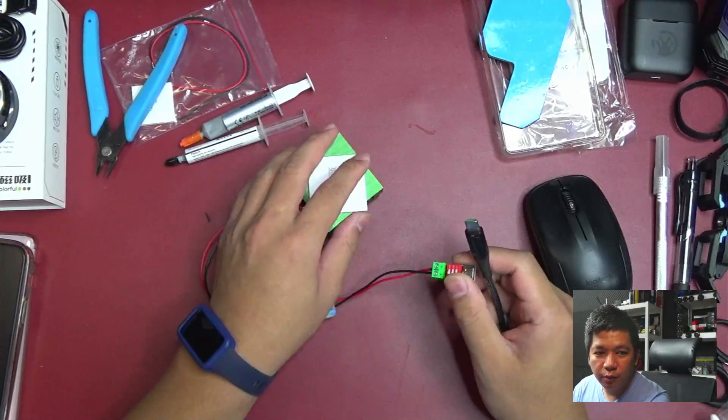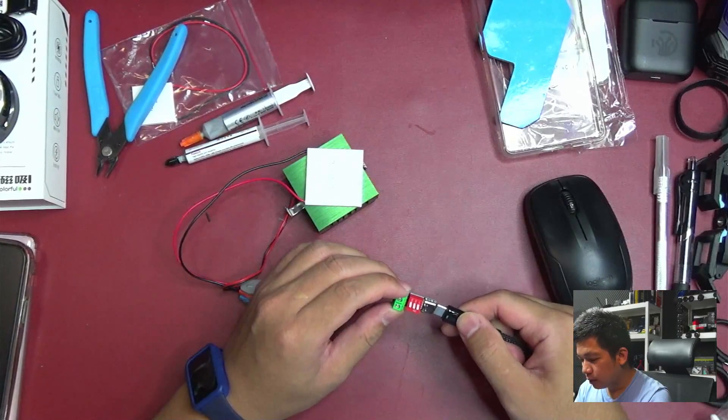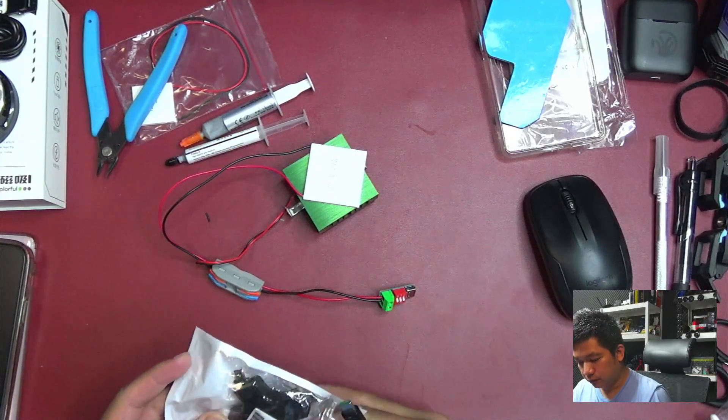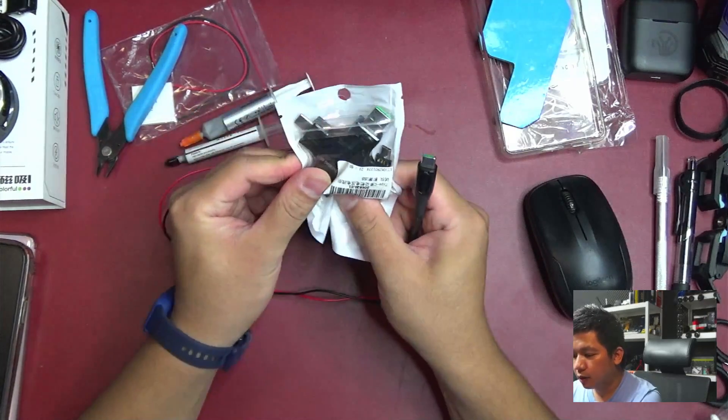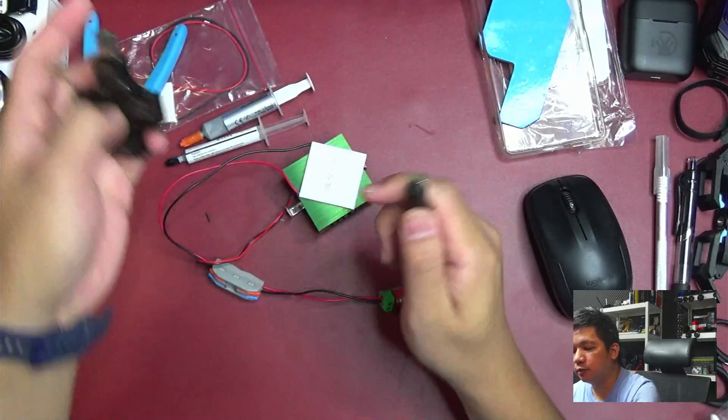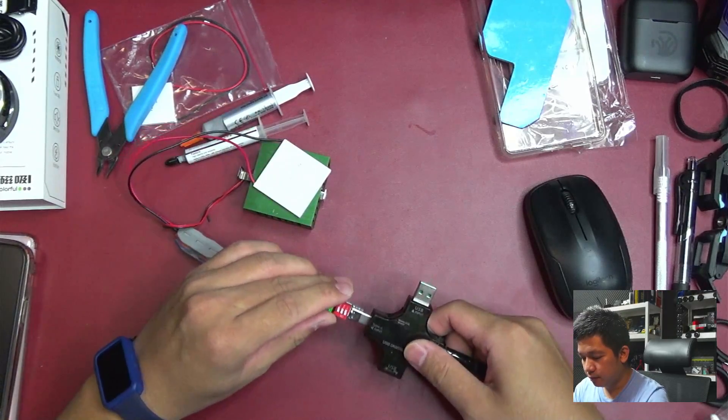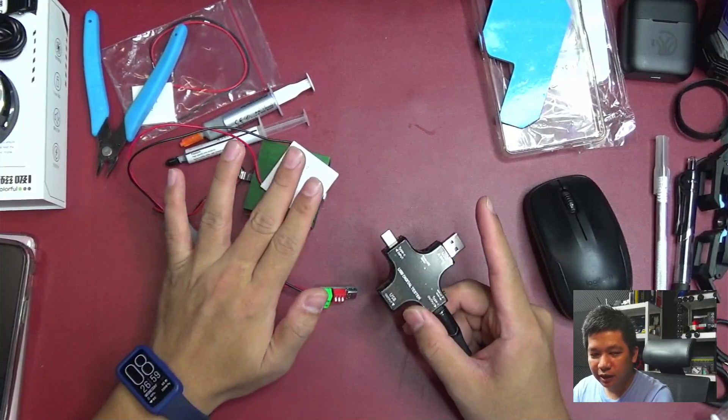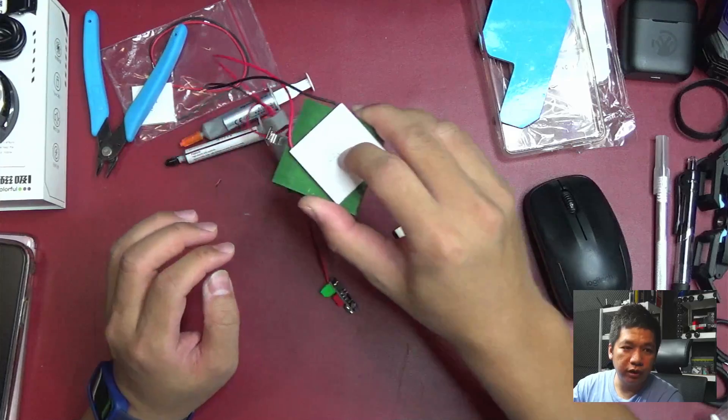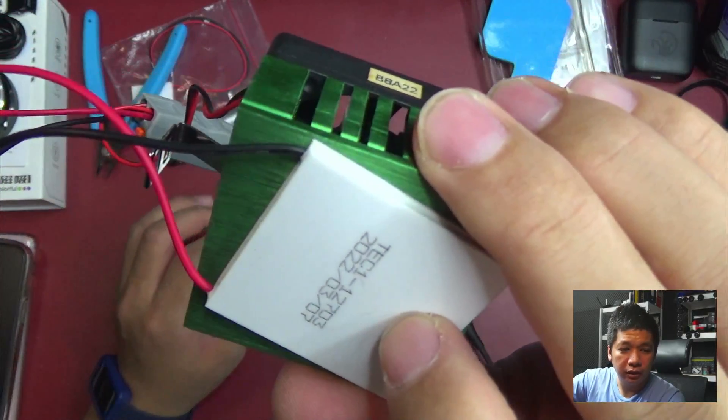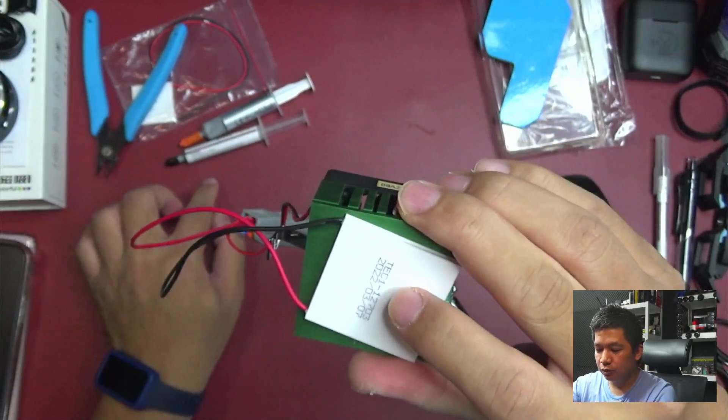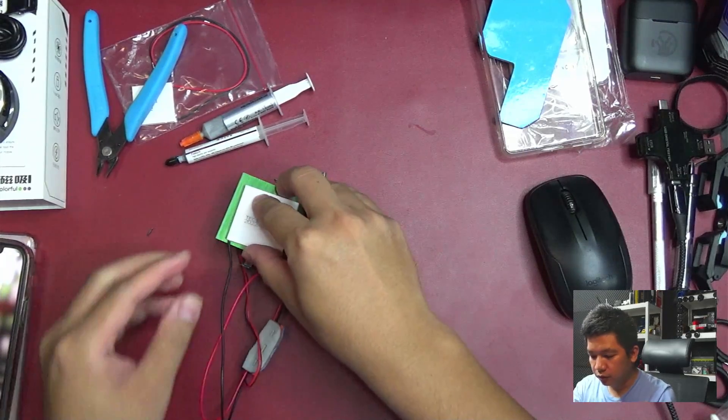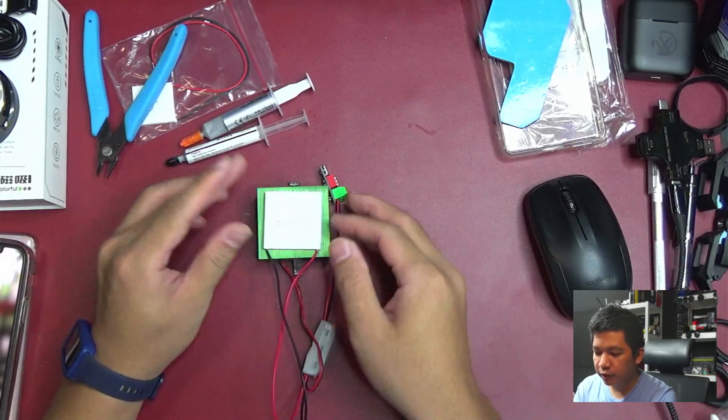Ini sebelum gue pasang gue coba nyalain dulu biar tau panasnya di sisi mana. Oke udah tau, itu jangan lama-lama ya, ngetes peltier jangan lama-lama takut rusak. Ini yang ada tulisannya kebetulan yang gue punya. Gak selalu ya, tapi rata-rata itu yang ada tulisannya itu yang bagian dingin biasanya, cuma gak selalu. Jadi gue saranin cek dulu. Oke kita langsung pasang pastanya dulu. Kalau udah pasang pasta, kalian mau lem pinggirnya pakai lem Tianma itu juga bisa ya.